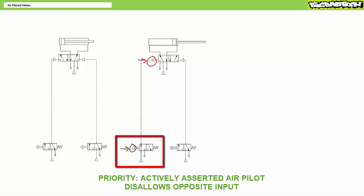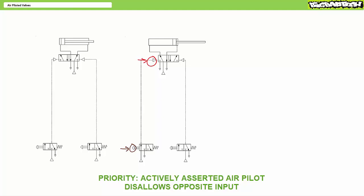Consider the act of extending the pneumatic cylinder. When an operator presses push button one on the left, the air pilot shifts the valve into a position such that the cylinder extends. Rather than releasing push button one, the operator instead keeps it pressed down and the air pilot on the left-hand side remains pressurized. Along comes operator two and presses push button two on the right-hand side, sending an air pilot signal to the valve. However, because the air pilot on the left-hand side remains pressurized, the spool doesn't shift and the cylinder remains extended.